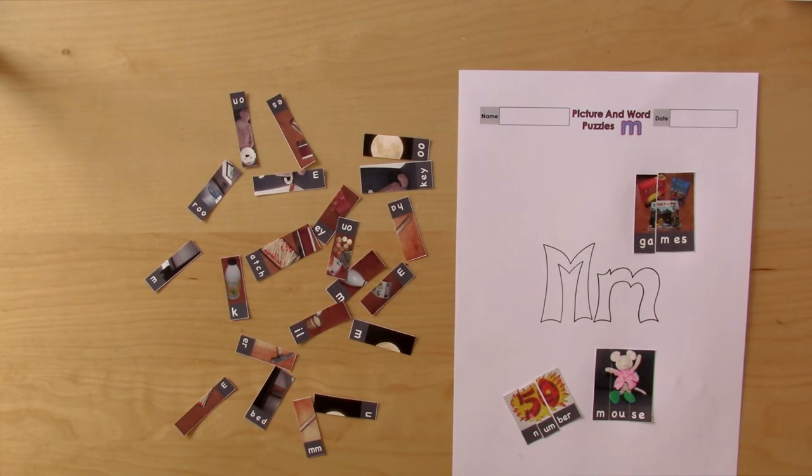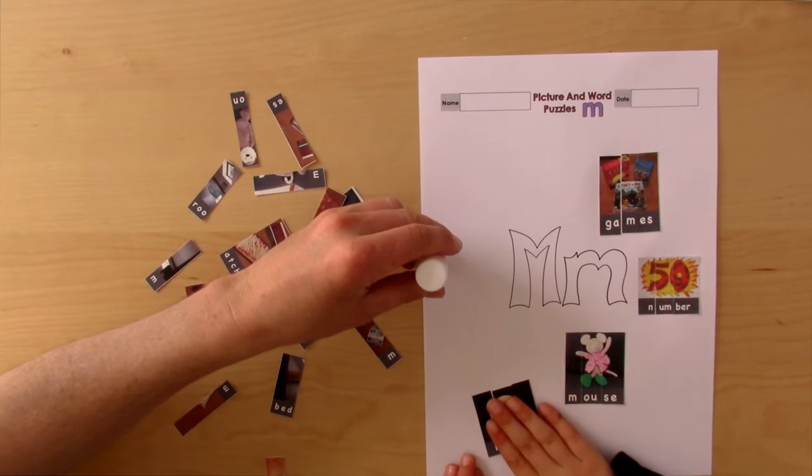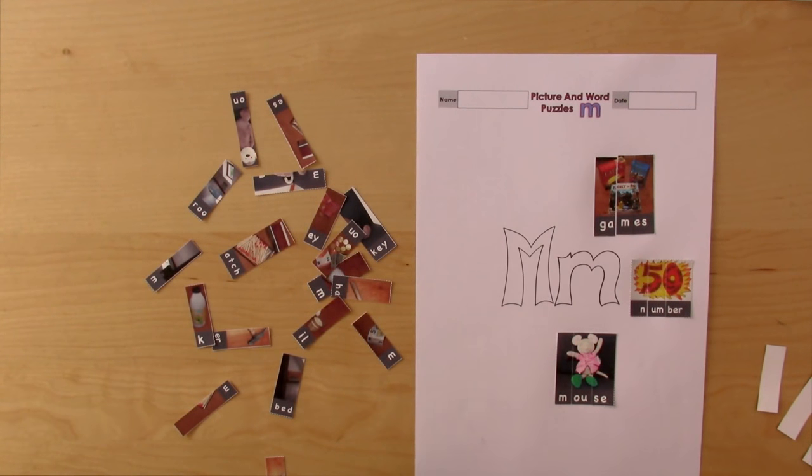And what's that? Numbers. Number. And how would we say number in French? Numéro. And what does that say? Moon. Moon. And how do we say moon in French? Lune. And again, no letter M. You're right. In French it's different than English.